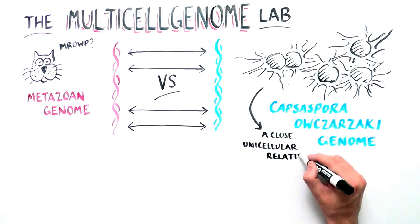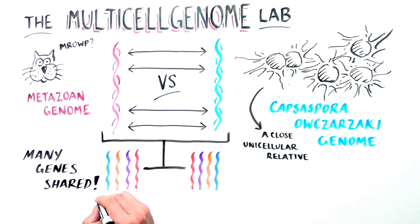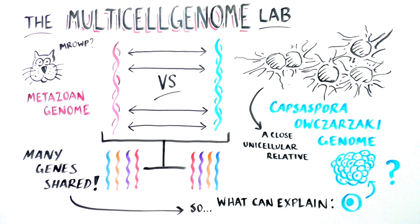Surprisingly, the investigators found that many genes were shared between the two organisms. Given that the common ancestor already had a complex genetic repertoire, gene innovation alone could not explain the origin of animal multicellularity. So what could explain its evolution?